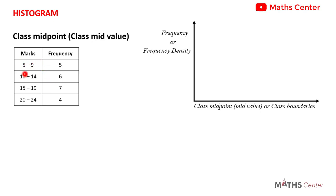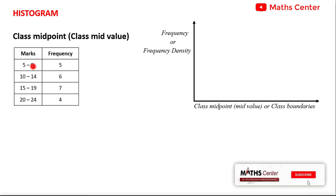When we take an interval, the smaller number is called the lower class limit and the bigger number is called the upper class limit. For example, for the interval 5 to 9, 5 is the lower class limit and 9 is the upper class limit.